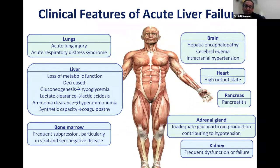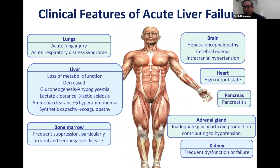When we look at the clinical features of acute liver failure, these are the sickest patients we have in the ICU. Once they get sick, they can develop acute lung injury with ARDS. In the liver, there are many changes: decreased gluconeogenesis — so these patients are very hypoglycemic — and difficulty clearing lactate, leading to lactic acidosis. They have difficulty clearing ammonia, so ammonia levels are very high, and they have decreased synthetic capacity leading to coagulopathy.